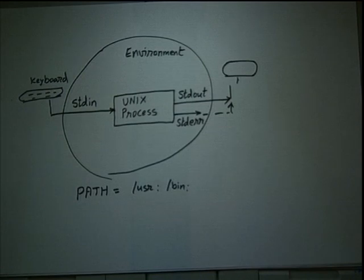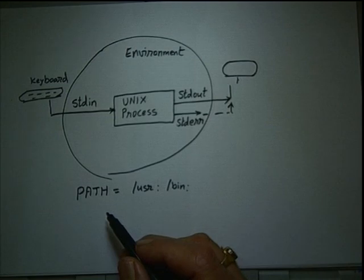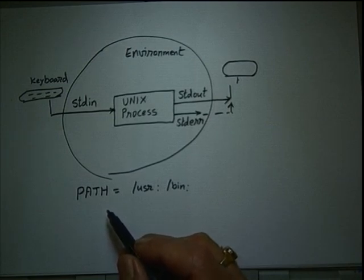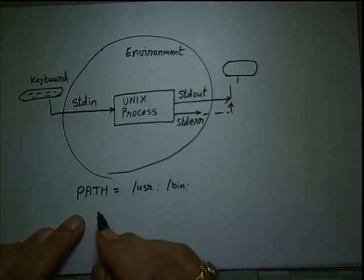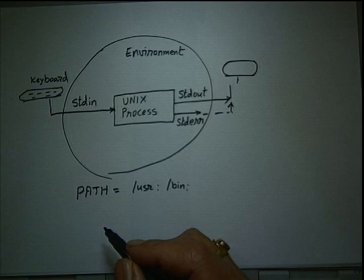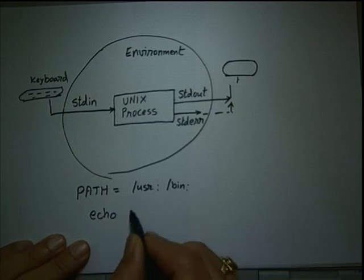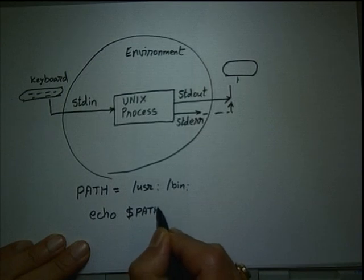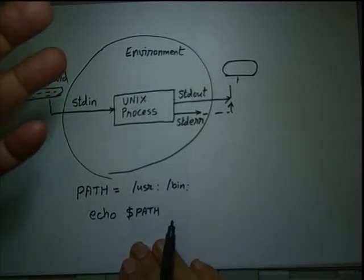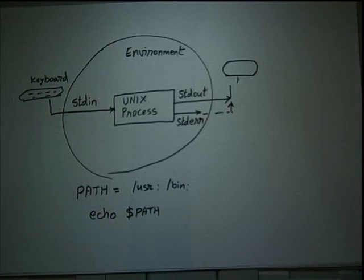PATH is just one of many environment variables. A new environment variable of your choice can be created in UNIX by just saying VARNAME=value. When you want to refer to a variable, you prefix a dollar symbol to it. A typical way of showing the current value of any environment variable is to use the echo command. If you say 'echo $PATH', the UNIX operating system will display the entire string which is the value of the PATH variable.